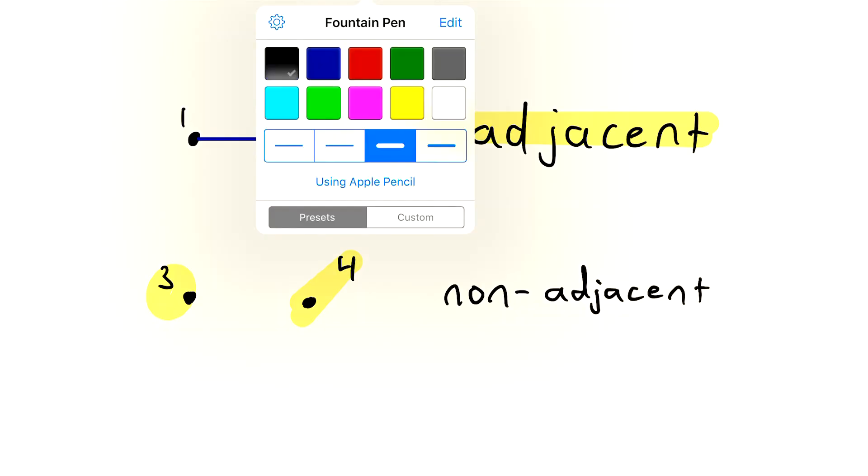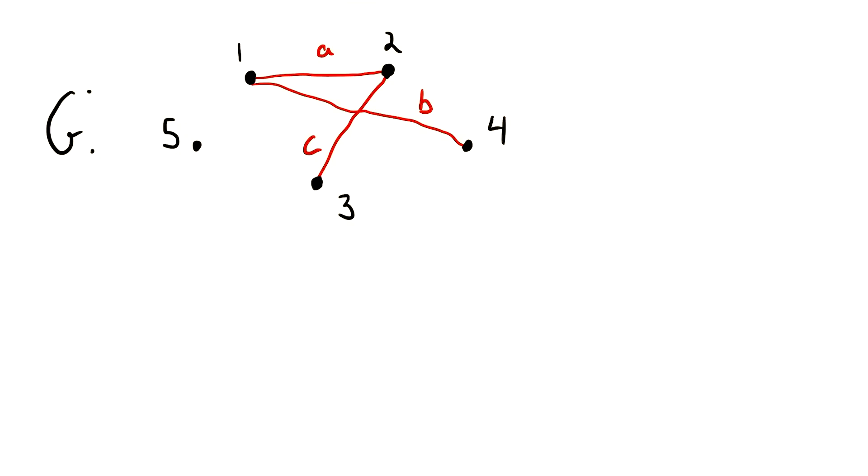Then let's take a look at some adjacent and non-adjacent vertices in a slightly more interesting graph. Here, of course, we've got a graph G, and we've got five vertices and a few edges. So can you tell which vertices are and are not adjacent? Well, the adjacent ones, of course, are the ones with edges joining them.